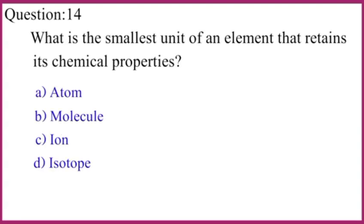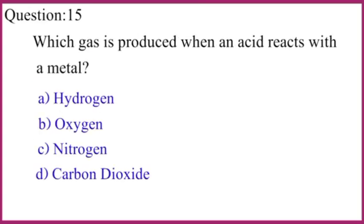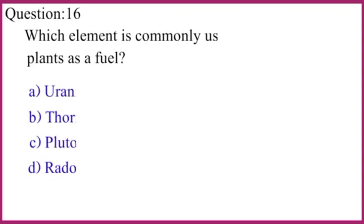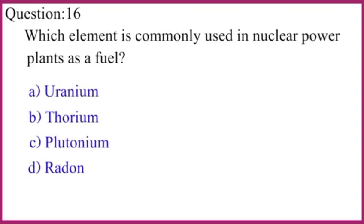What is the smallest unit of an element that retains its chemical properties? The correct answer is atom. Which gas is produced when an acid reacts with a metal? The gas produced is hydrogen. Which element is commonly used in nuclear power plants as a fuel? The correct answer is uranium.